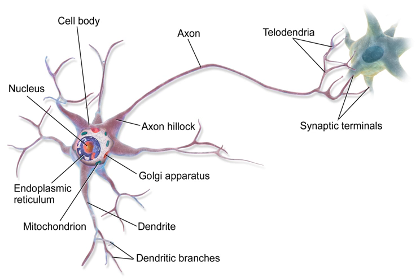If the voltage changes by a large enough amount over a short interval, the neuron generates an all-or-nothing electrochemical pulse called an action potential. This potential travels rapidly along the axon and activates synaptic connections as it reaches them. Synaptic signals may be excitatory or inhibitory, increasing or reducing the net voltage that reaches the soma. In most cases, neurons are generated by neural stem cells during brain development and childhood. Neurogenesis largely ceases during adulthood in most areas of the brain; however, strong evidence supports generation of substantial numbers of new neurons in the hippocampus and olfactory bulb.